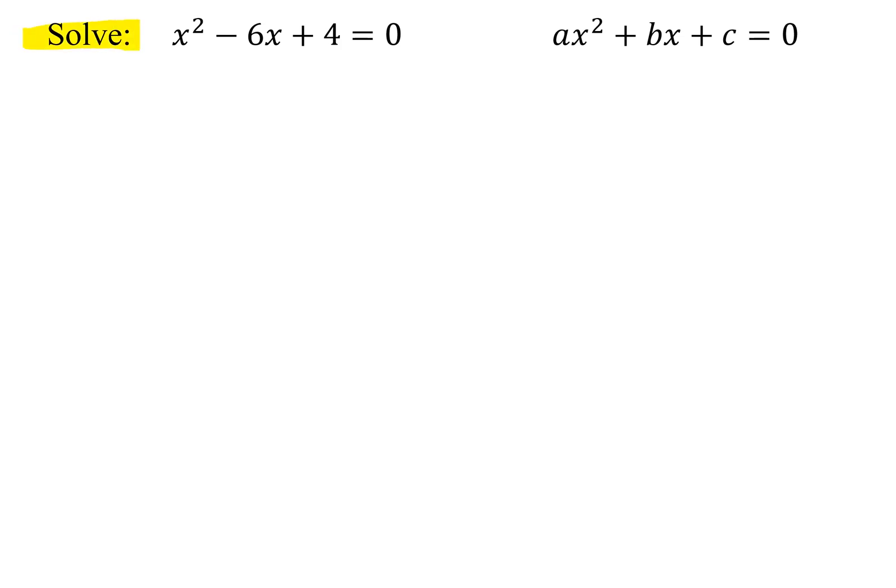In this problem, we're asked to solve the equation x squared minus 6x plus 4 equals 0.